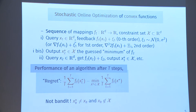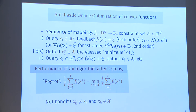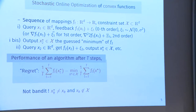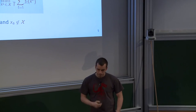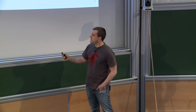Emilie spoke about regret in the last talk. You have a sequence of mappings f1 through f_T, and you compare the minimum over all x of the cumulative average loss to the cumulative loss you incur by outputting x*_t at stage t. The regret is the difference between the cumulative loss and the best-in-hindsight loss — meaning the loss if you had known the average function in advance. Note: this is not exactly bandit convex optimization; in bandit, x*_k equals x_k, but here x*_k just needs to be in the constraint set, while I can query the function anywhere.